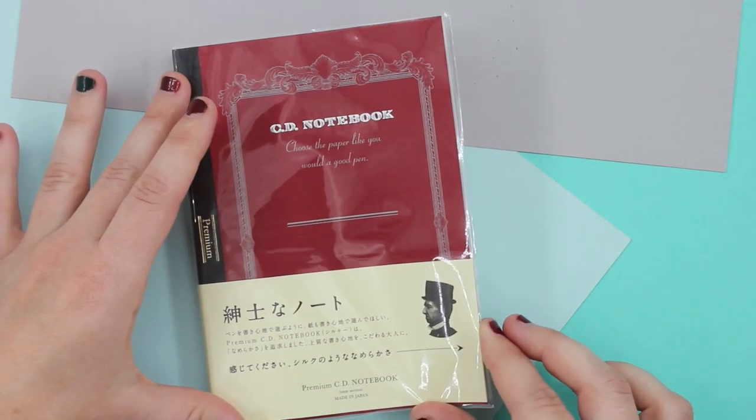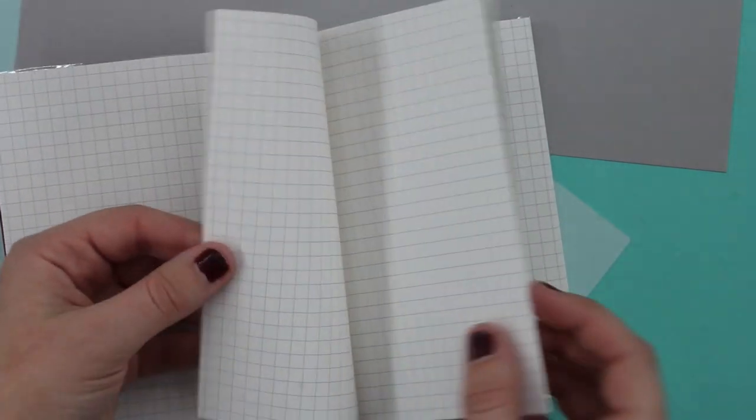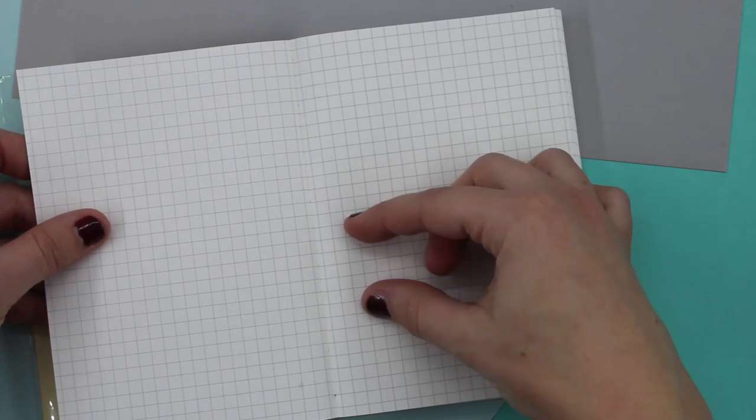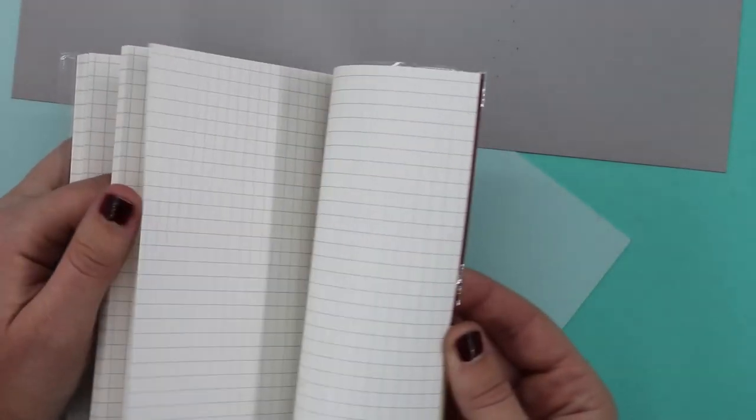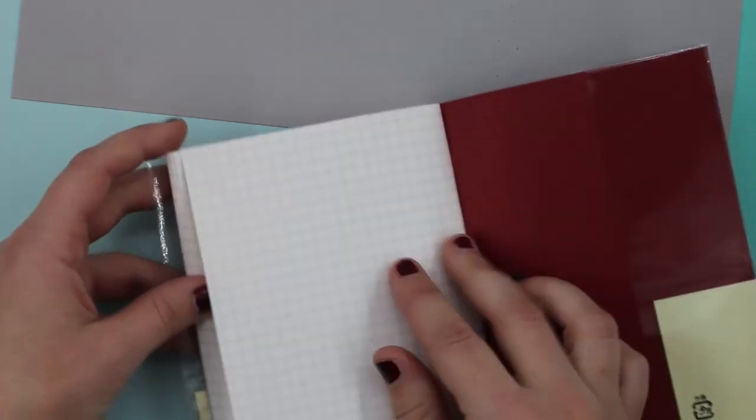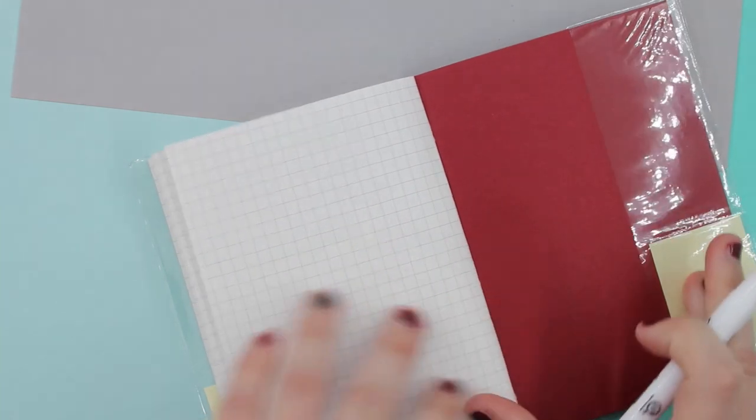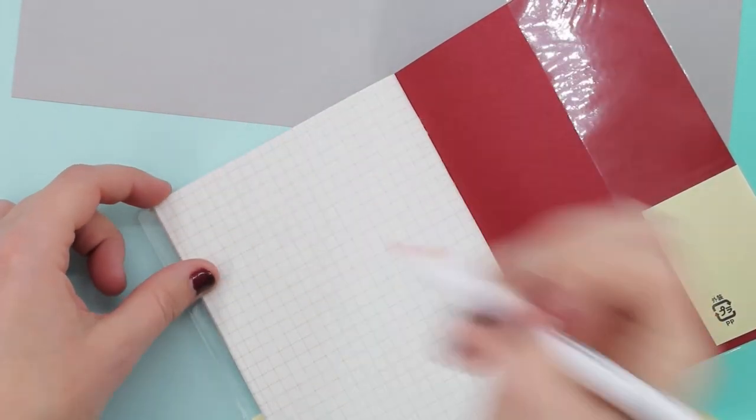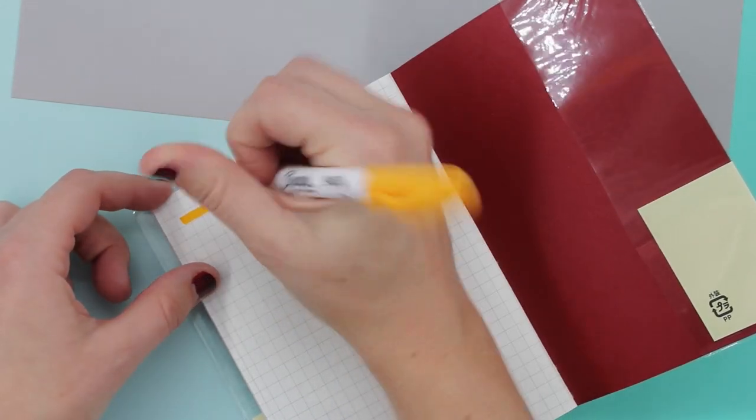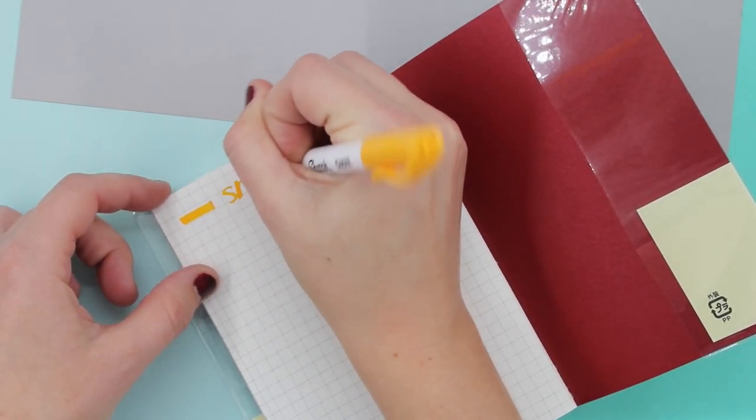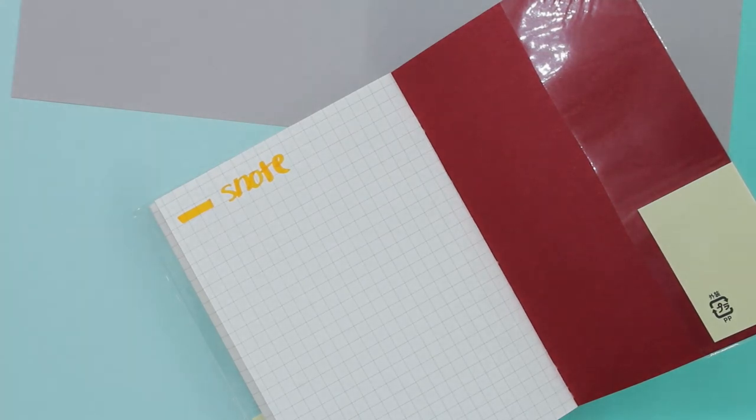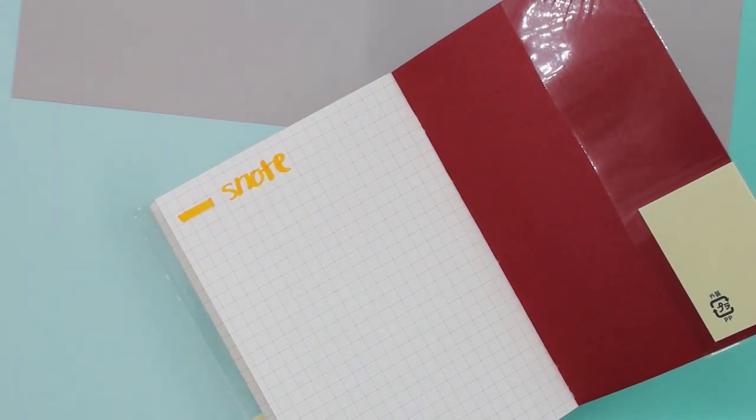So now we have the CD notebook. So this is a Japanese version. It's a thicker paper. It is the grid, it is larger. These are, I think, the 5-millimeter sections. The paper is so smooth. I feel like this is smoother than anything so far that I felt, and I'm really excited about it. So first time writing in it. This was from my most recent JetPens haul. So here we have it. So nice. I'm really liking this.